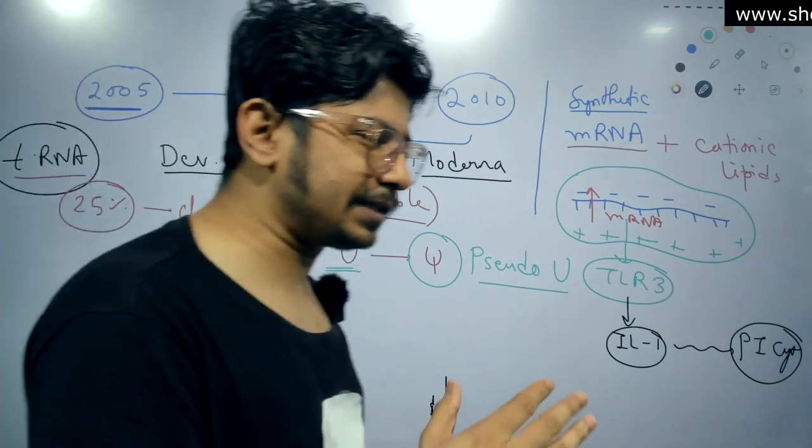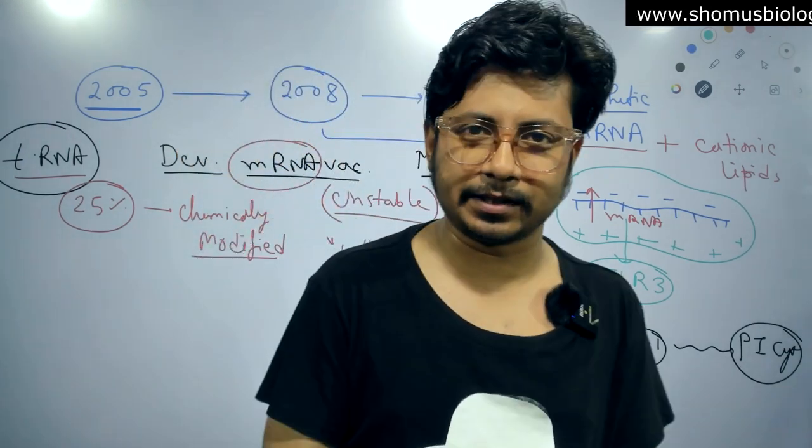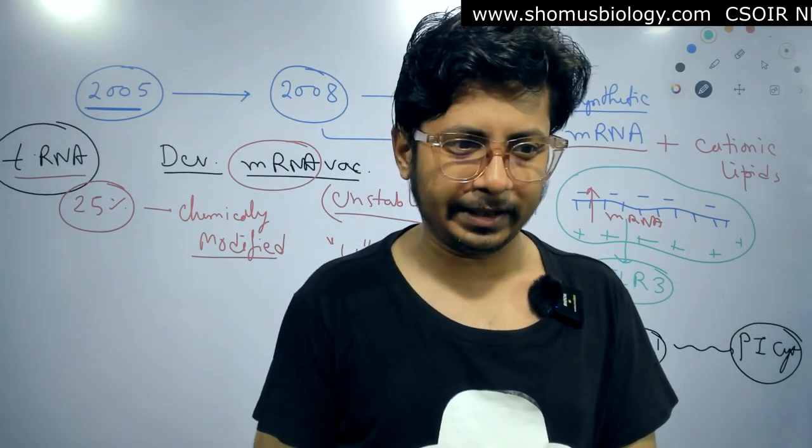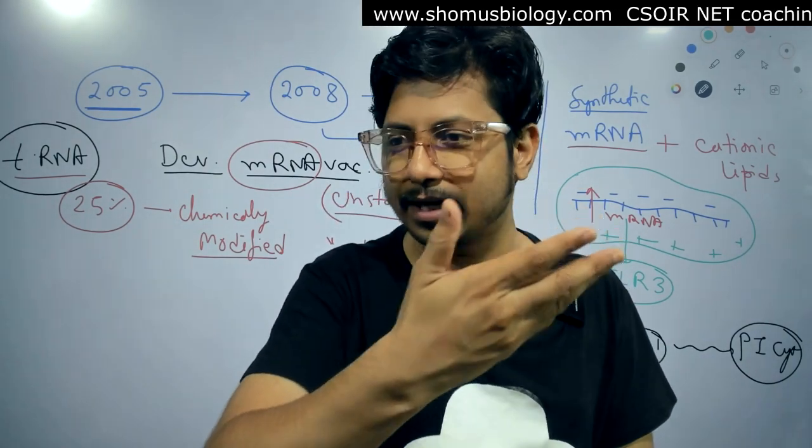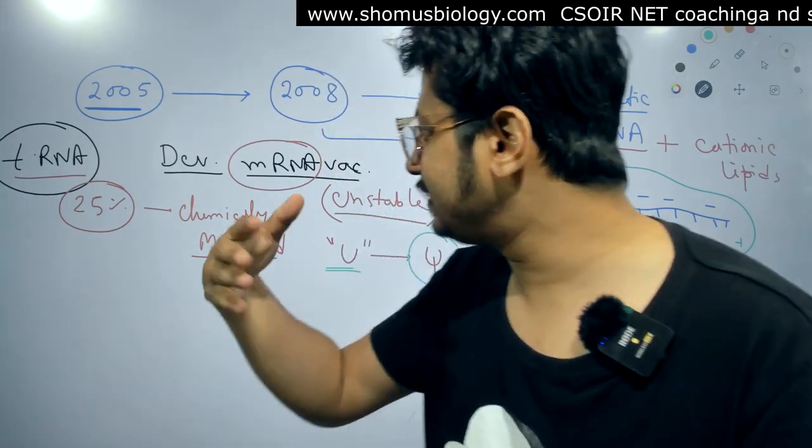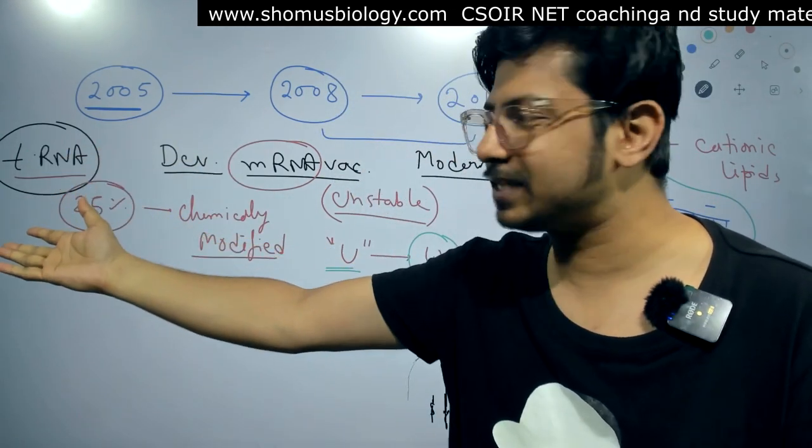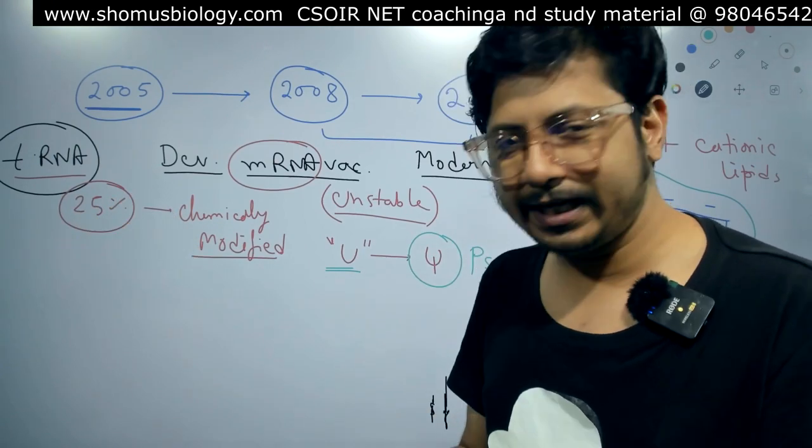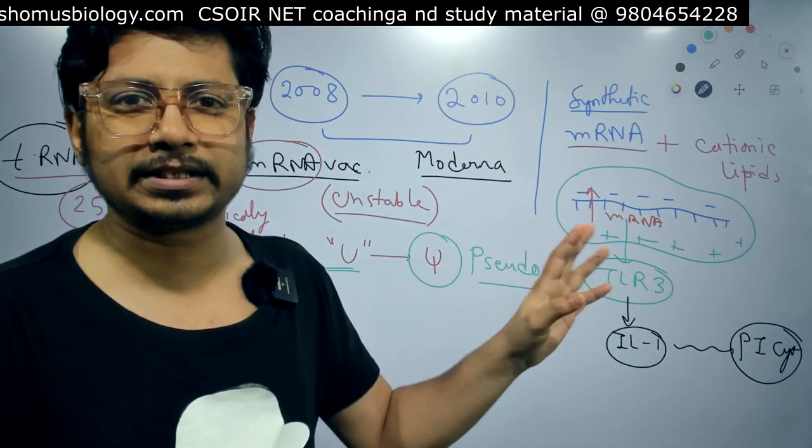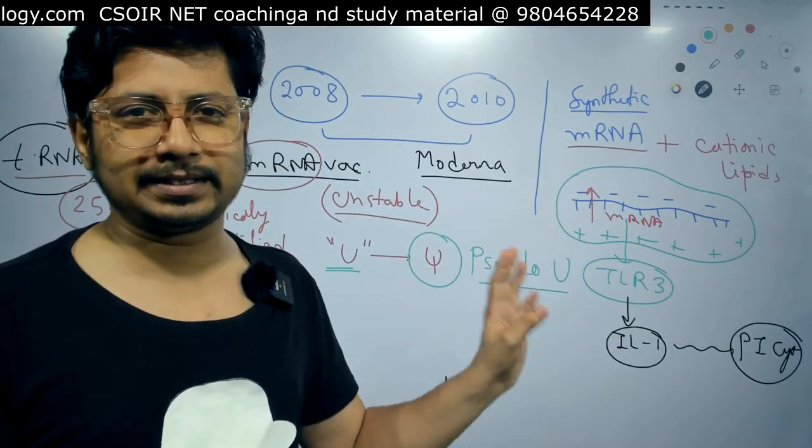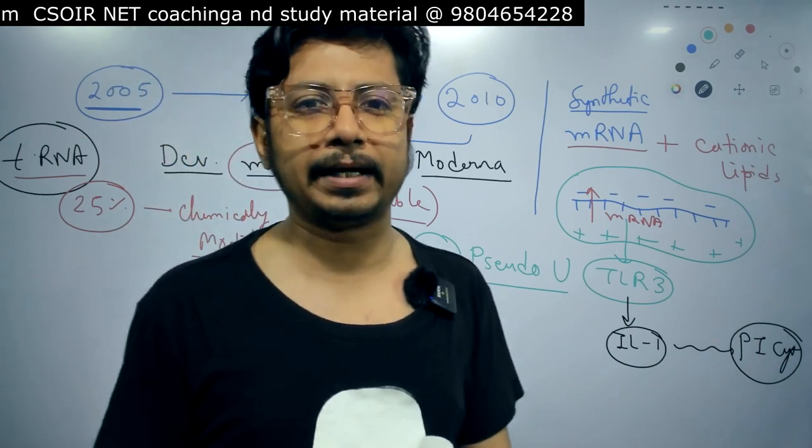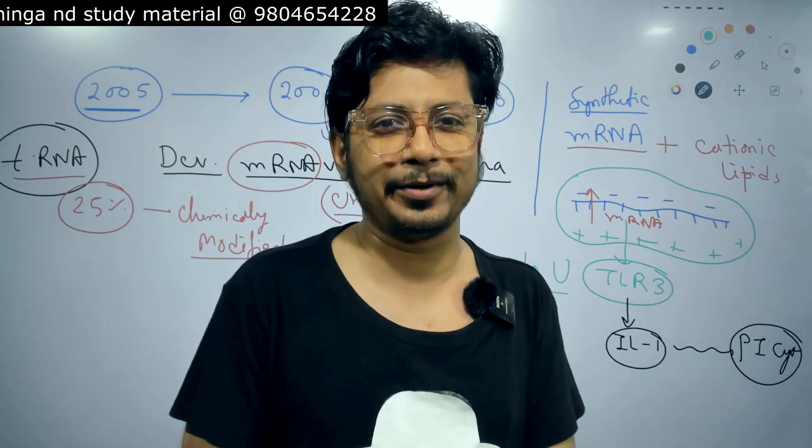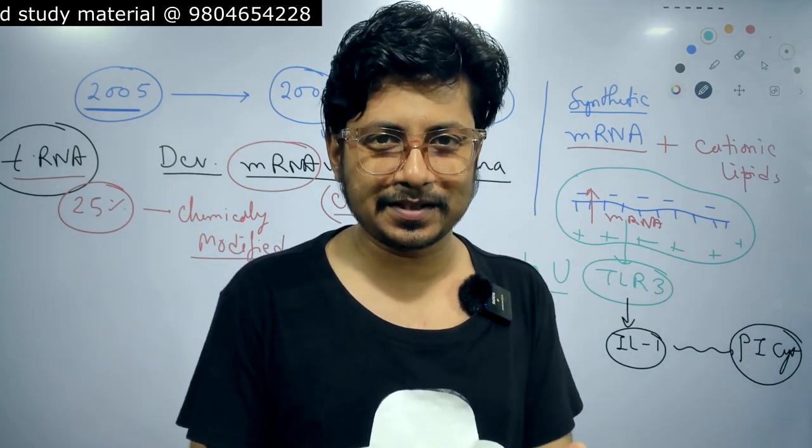This simple modification made me fascinated about biological discoveries. The biggest discoveries in this world come from simple solutions right in front of you. The tRNA was standing right in front of us, stating that a simple base modification can lead to so much change. It will solve all your problems because it gives you more stability. They knew it would increase stability beforehand, but the question remained: will that solve the immune system response?